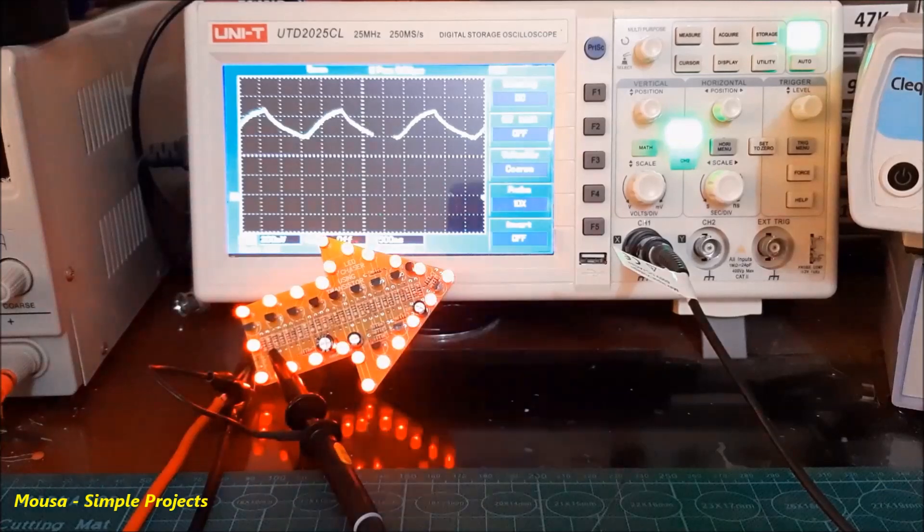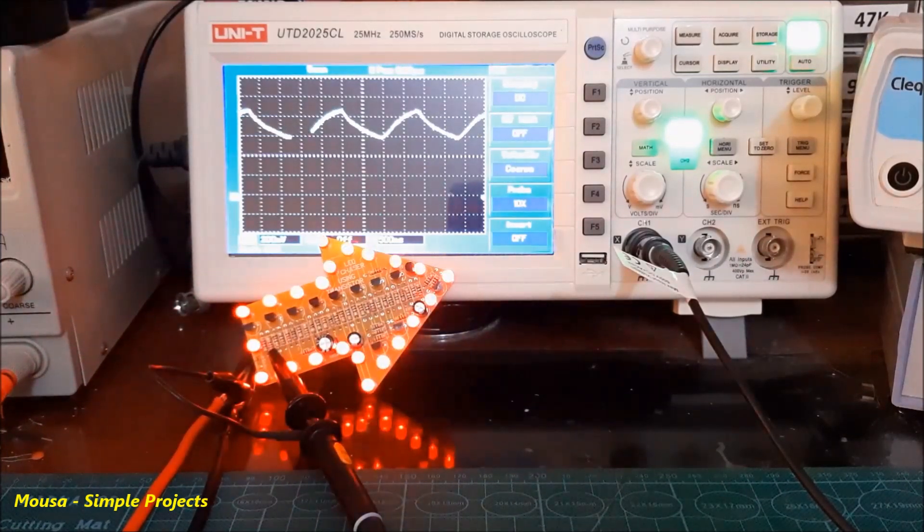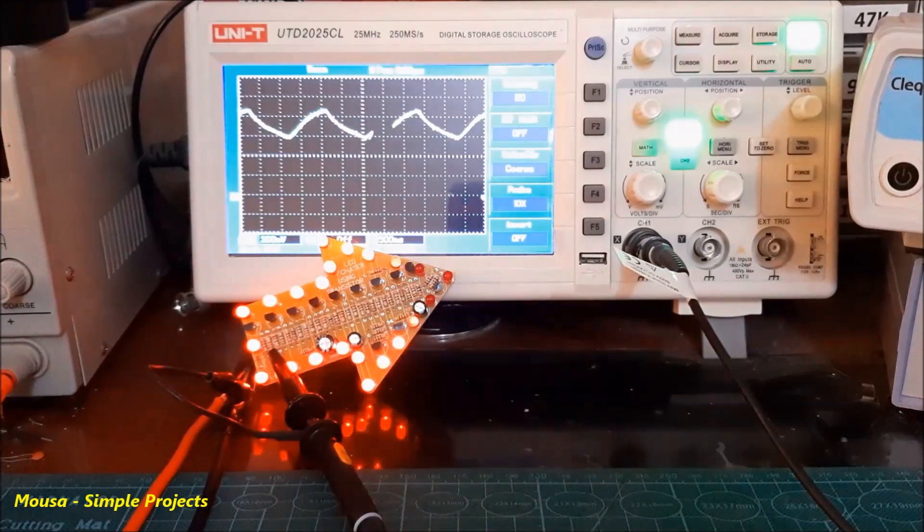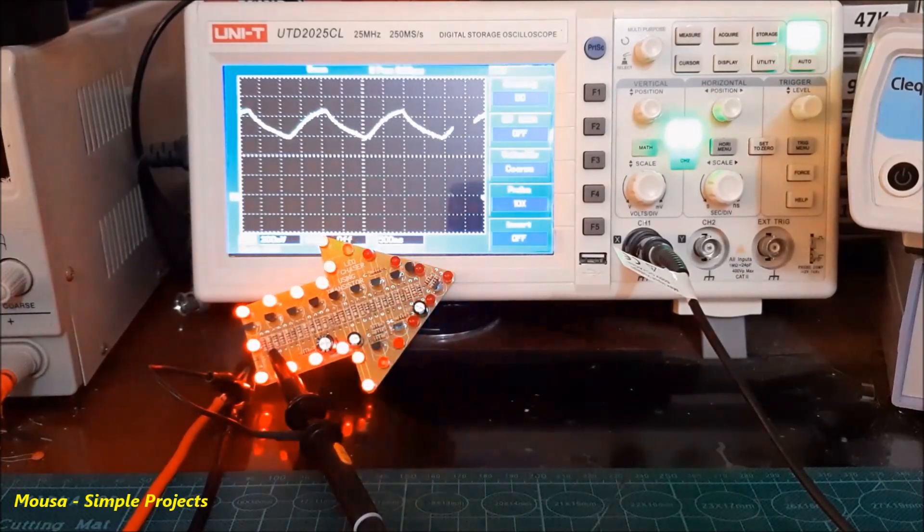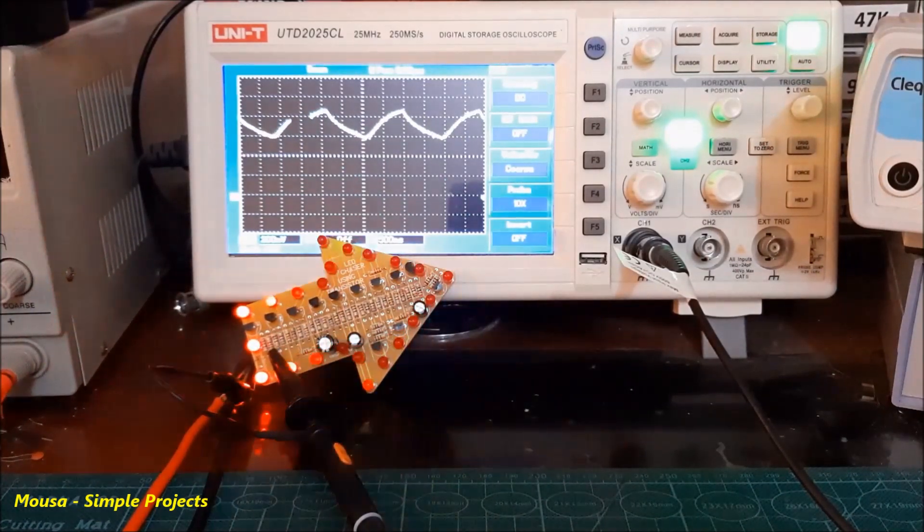As you can see, at the minimum voltage level of the oscillator, the LEDs are running together at the same time. And when the voltage starts to increase, the LEDs turn off one by one. Please like this video and subscribe to my channel. Thanks for watching.